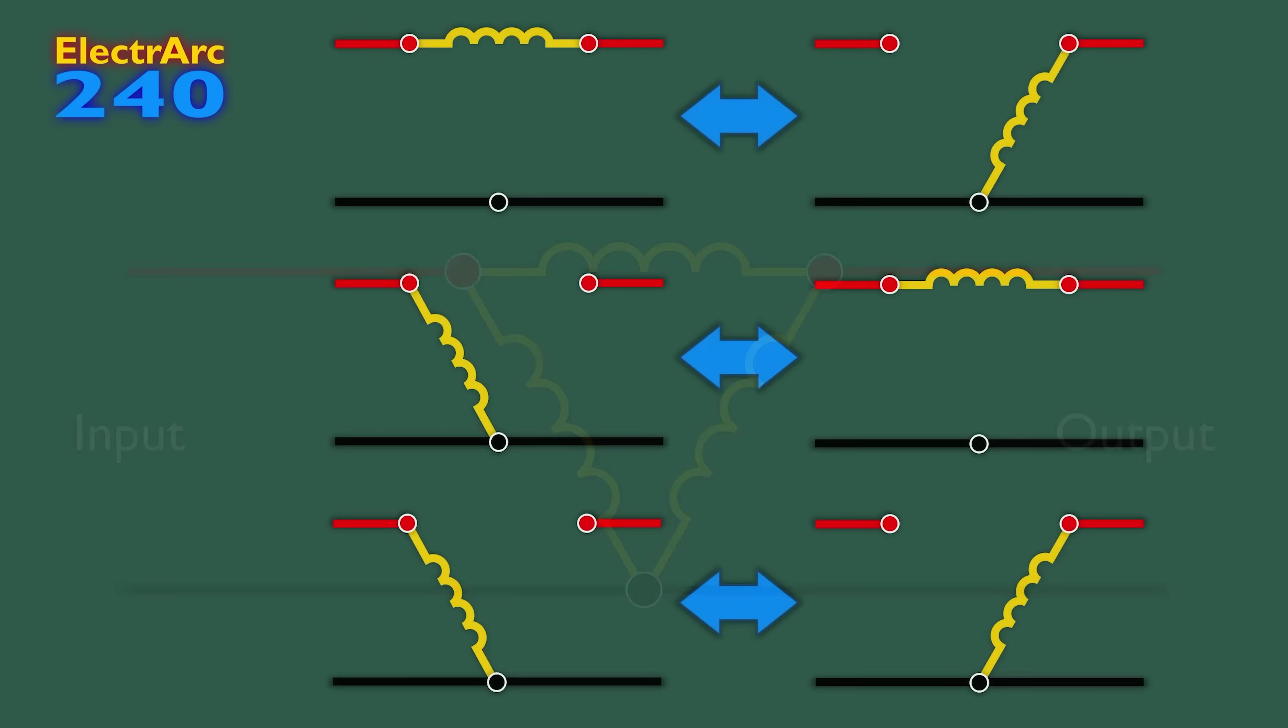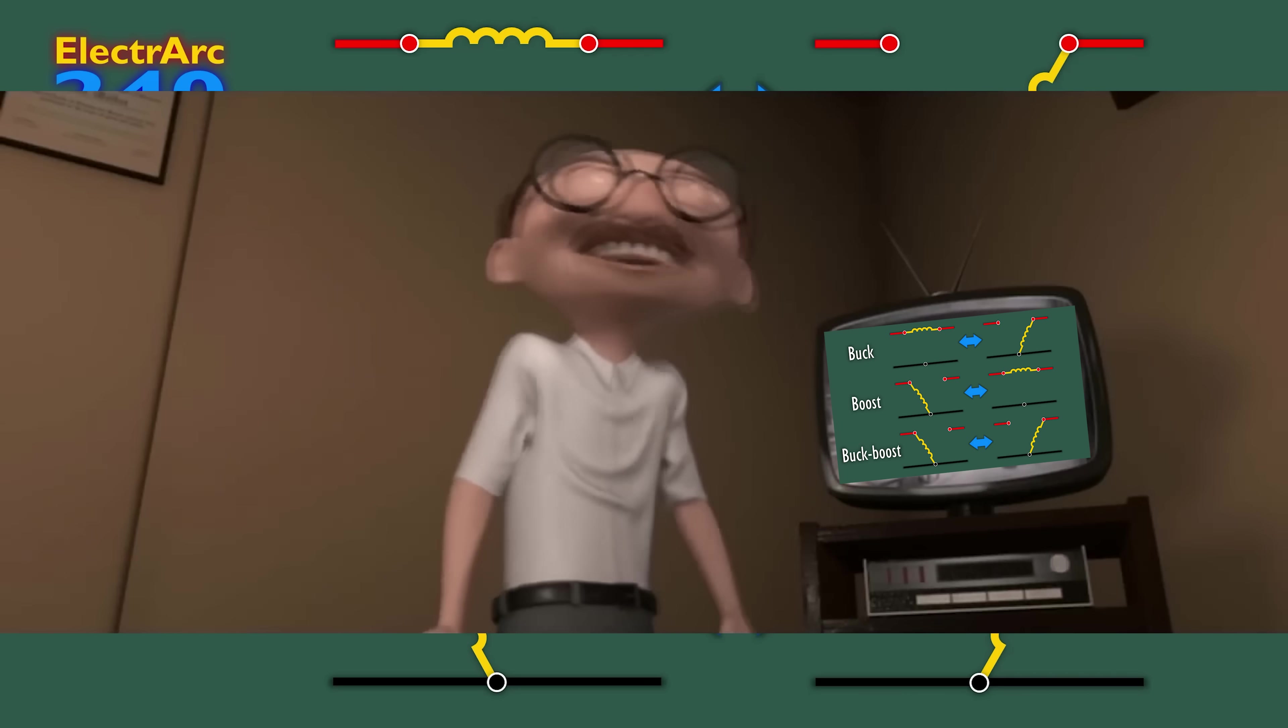In order to convert energy, we must move our inductor between two of these possible locations, with the first being to put energy in, and the second to release that energy. This means there are three possible pairs of locations for our inductor, and judging by this video's title, there's also three fundamental converter topologies. Coincidence? I think not!